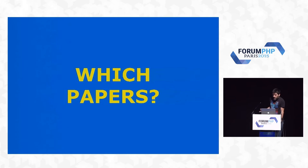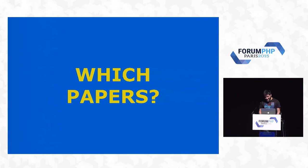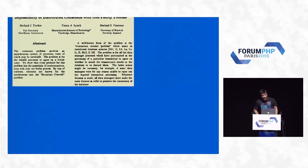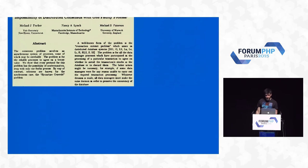That was a question I asked myself all the time. People said you need to learn about FLP — okay, what even is FLP? FLP stands for Fisher, Lynch, and Patterson. There is a paper called 'Impossibility of Distributed Consensus with One Faulty Process.' That's FLP, named after its authors Fisher, Lynch, and Patterson.